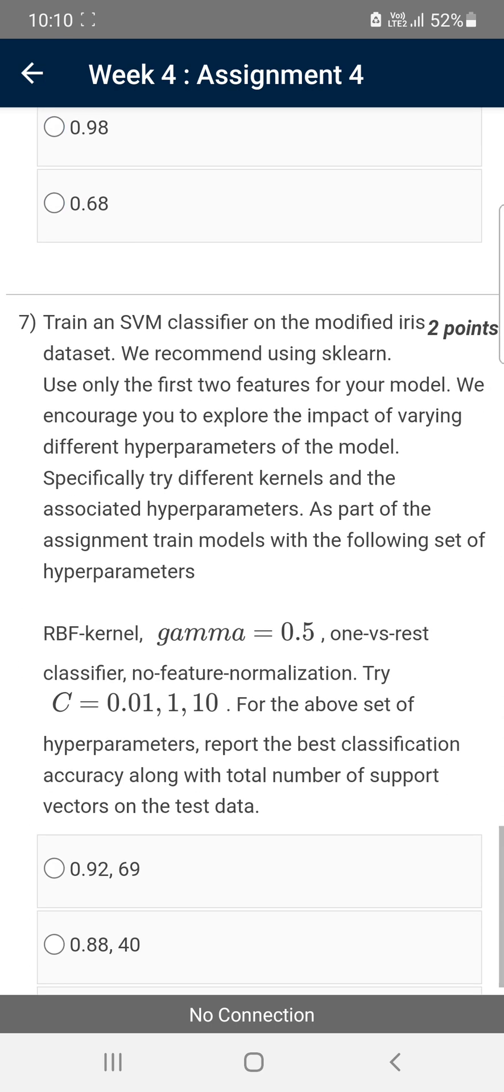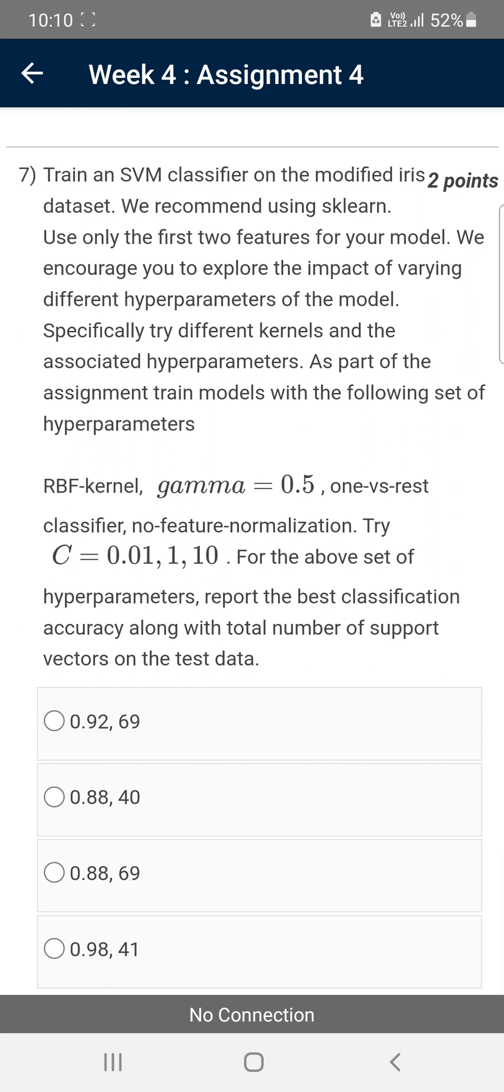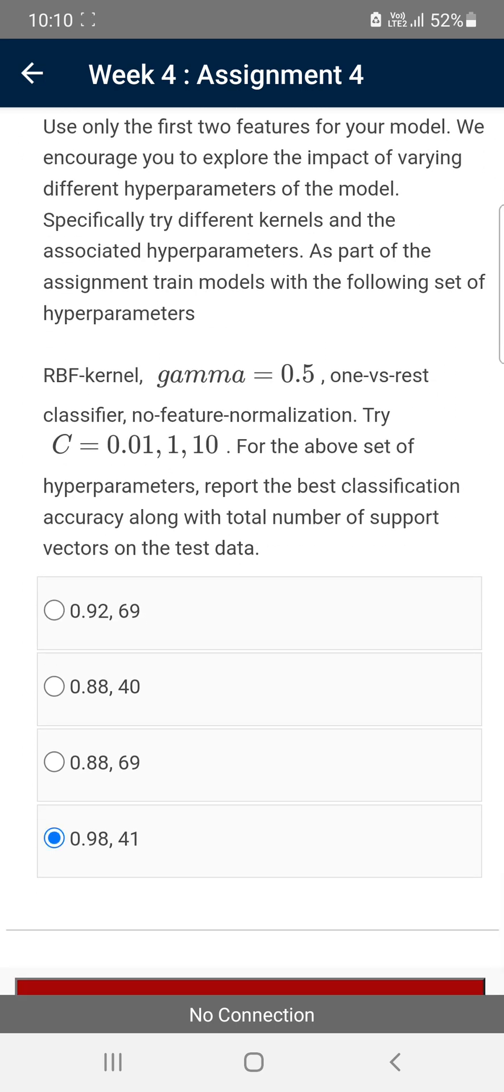Moving on to the final question of this assessment, that is the seventh one. Here they give RBF kernel and gamma value 0.5 and one-versus-rest classifier with no feature normalization. They said to use C value 0.01, 1, and 10. Report the total number of support vectors on the test data. For the seventh question, the probable solution is the fourth option: 0.89, 0.98, 41. In the other case, it may also be option C: 0.88, 69. Most probably D will be the answer.